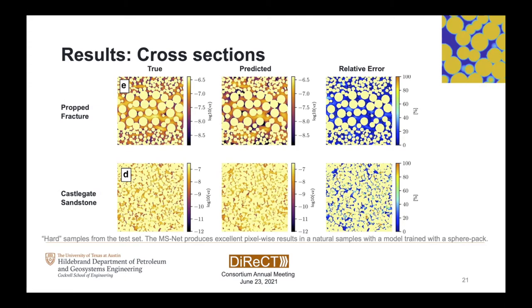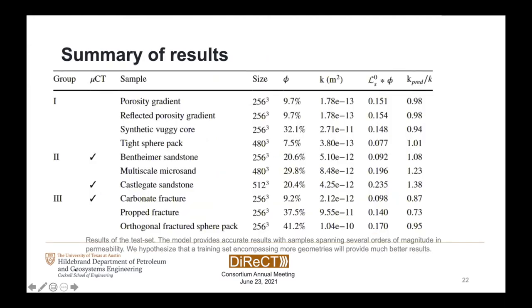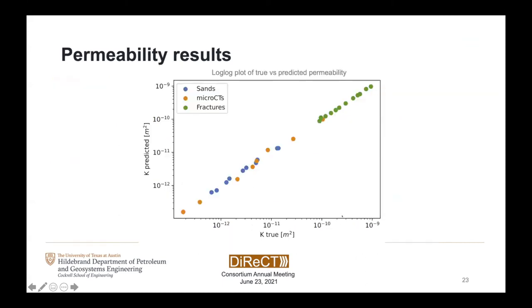We got pretty acceptable errors across the board — our highest error was around 38%. The permeability spans many orders of magnitude, which is remarkable, because even when comparing numerical results, different solvers tend to overestimate or underestimate permeability by around 20%. So these results are well in line with the current numerical simulation state of the art. We can also see plots of the permeabilities of the test sets covering single fractures, a range of sands, and micro-CT scans.